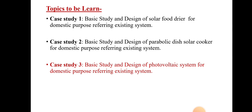Which are those three case studies? The first case study is related to the solar food dryer. The second case study is related to the parabolic dish cooker and the third case study is related to the photovoltaic system. Out of those three case studies, the first two — solar food dryer and solar cooker — we have already learned. Now the remaining third case study we are going to see in today's lecture and in the upcoming lectures.